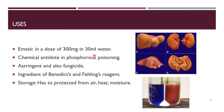Uses of copper sulfate: as an emetic in a dose of up to 300 mg in 30 mL water, as a chemical antidote in phosphorus poisoning, as an astringent, and as a fungicide. It is also an ingredient in Benedict's and Fehling's reagent. Storage should be protected from air, heat, and moisture. In phosphorus poisoning, a yellowish color appears on the liver and organs; copper sulfate acts as an antidote in such cases.